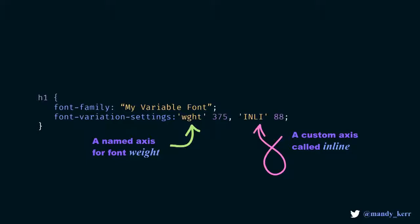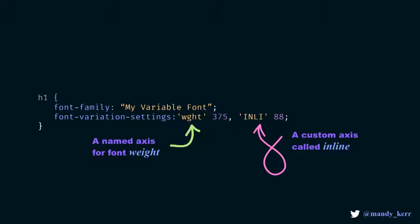That property is called font-variation-settings. What this does is enable us to define as many named and custom axes as we need. A named axis in a variable font is something like weight, width, slant, and optical sizing — anything outside of that is a custom axis. So here, I'm defining weight, referenced with a four-character code of WGHT, and then it has an associated value. We separate that with a comma and can define another axis. The second one is the custom axis called inline, referenced with the characters INLI — that's determined by the font designer. Named axes are in lowercase, and custom axes are in uppercase.